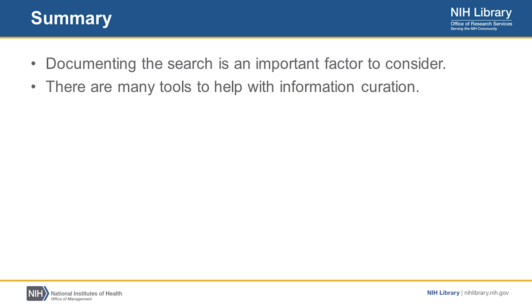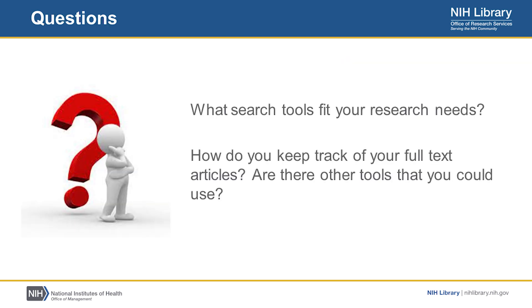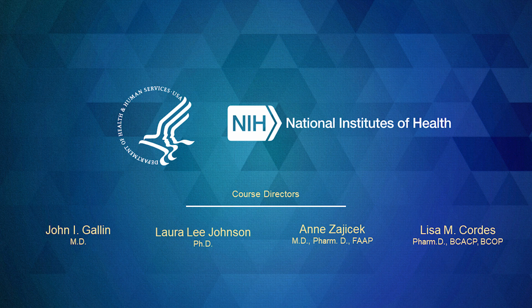In summary, documenting the search is not an exciting topic, but it's an important factor to consider. There are many other tools out there to help you with your information curation, whether it's setting up literature alerts, keeping track of the literature, or using citation management software to keep track of everything you've come across. Some questions to consider: what search tools fit your research needs, and how do you keep track of your full-text articles — are there other tools that you could use? Thank you for listening.